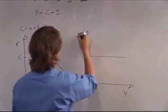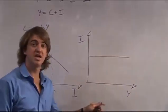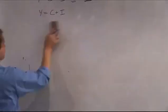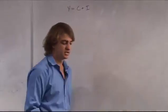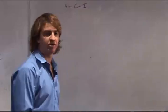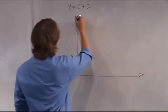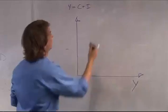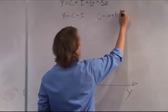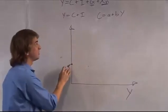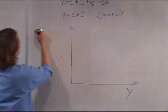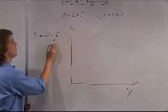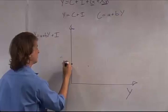Investment will remain the same through all the different values of output, because it corresponds to that level R1. Now let's draw this in terms of output. We need the graph for C + I. We know C = a + bY, so Y = a + bY + I. You're going to have an intercept point which is equal to a.